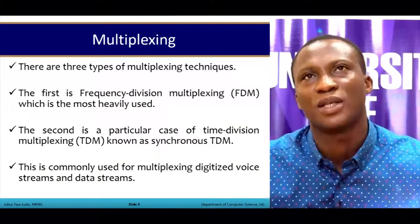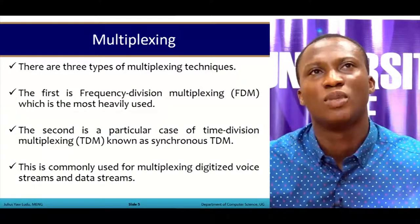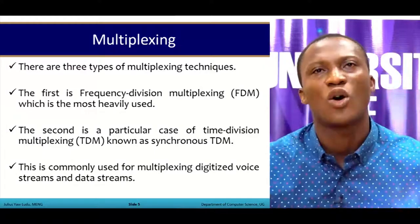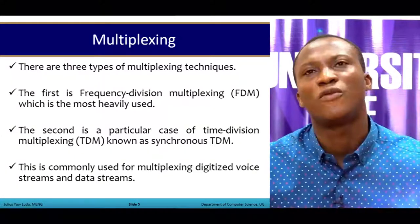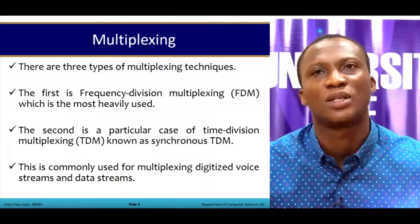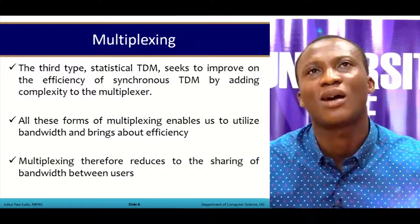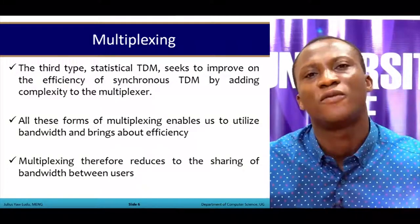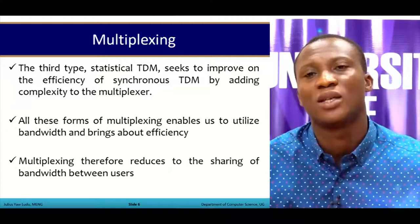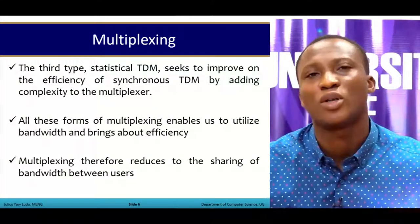There are three types of multiplexing techniques. The first is frequency division multiplexing, which is the most heavily used in data communication. The second is time division multiplexing, also known as synchronous TDM, commonly used for multiplexing digitized voice and data streams. The third is statistical TDM, which improves on synchronous TDM efficiency by adding complexities to the multiplexer.